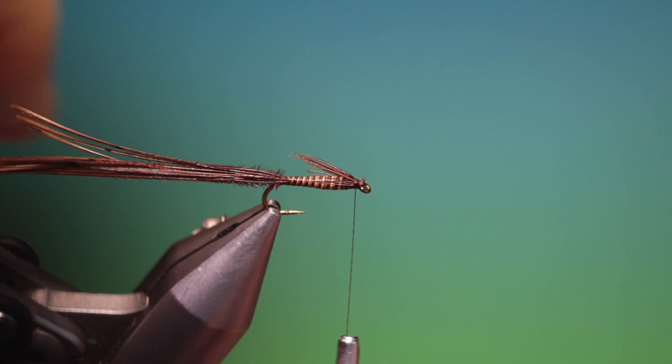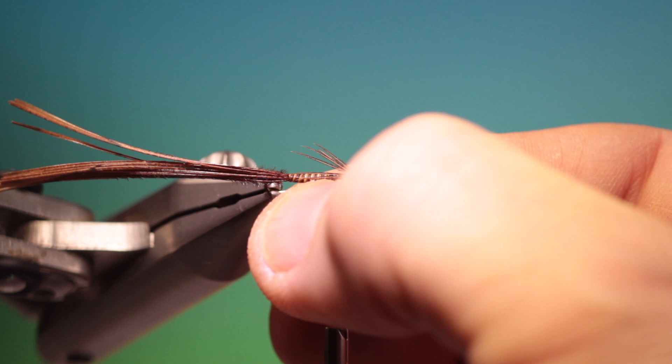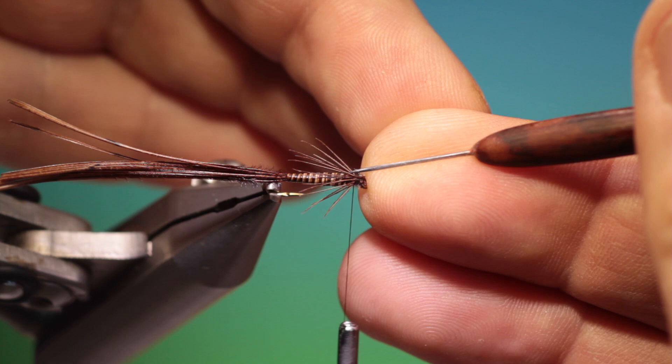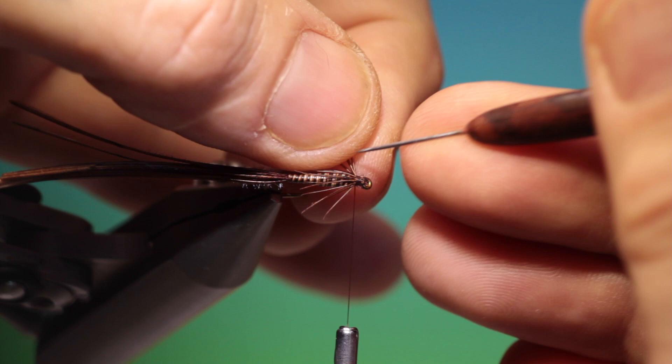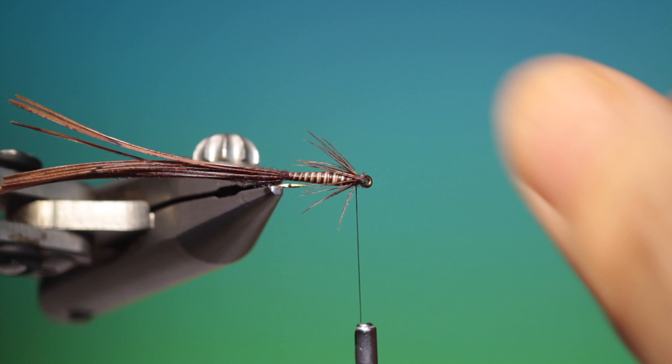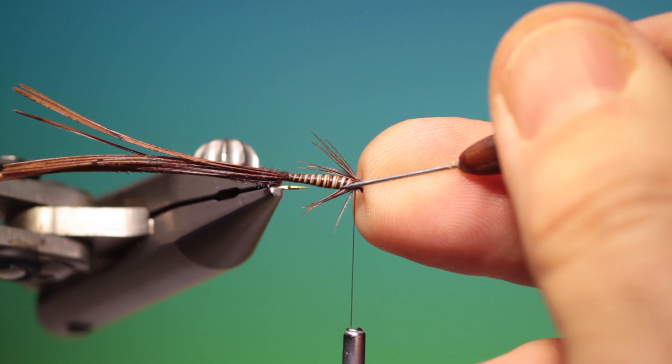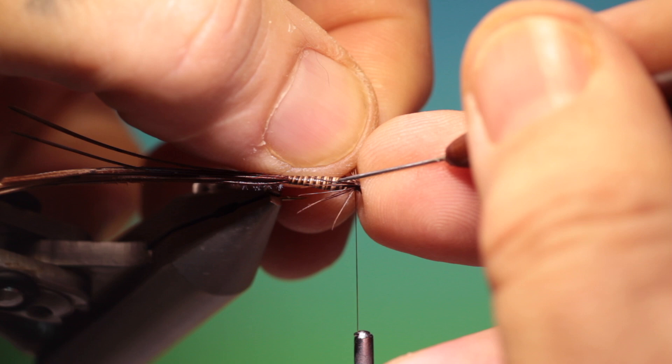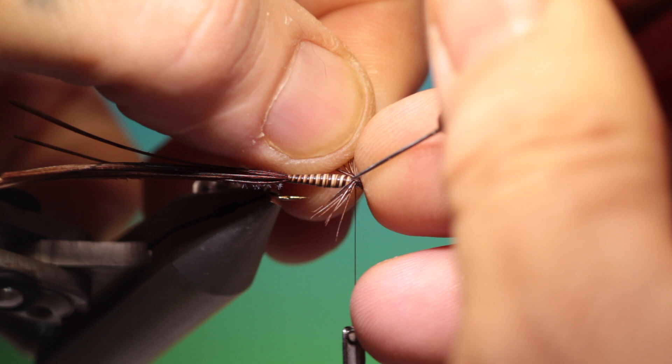Go back, just separate that so I get approximately seven moose on each side. I need a little bit more of that. Perfect.